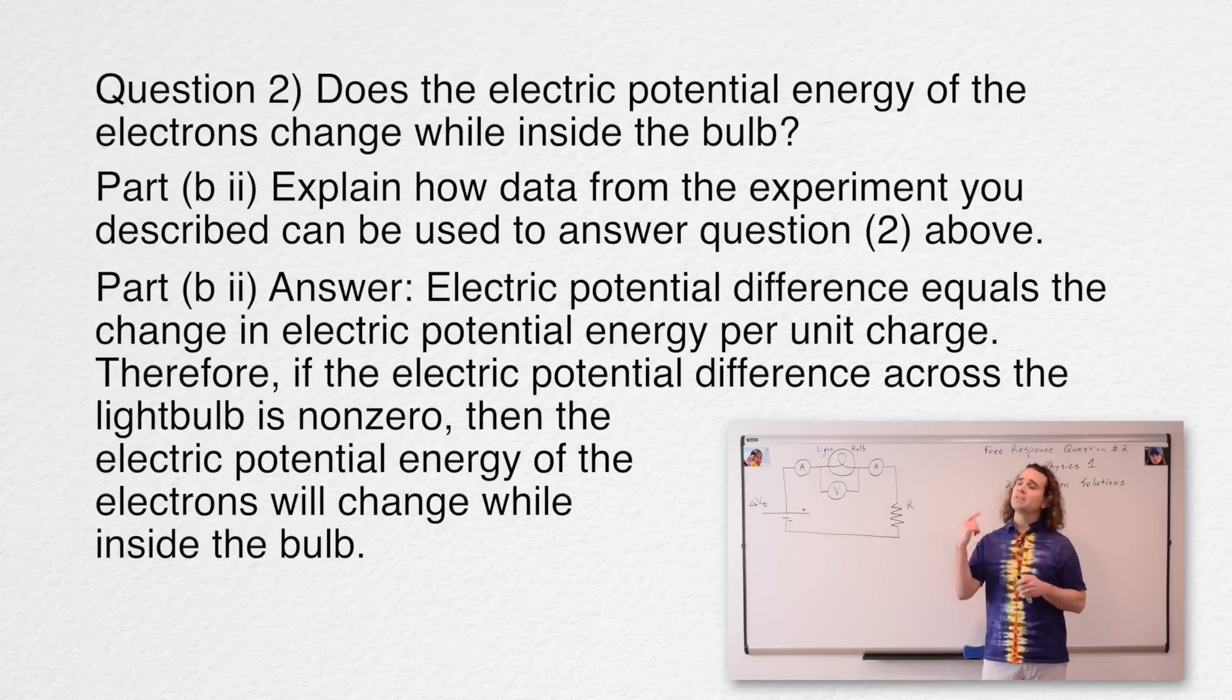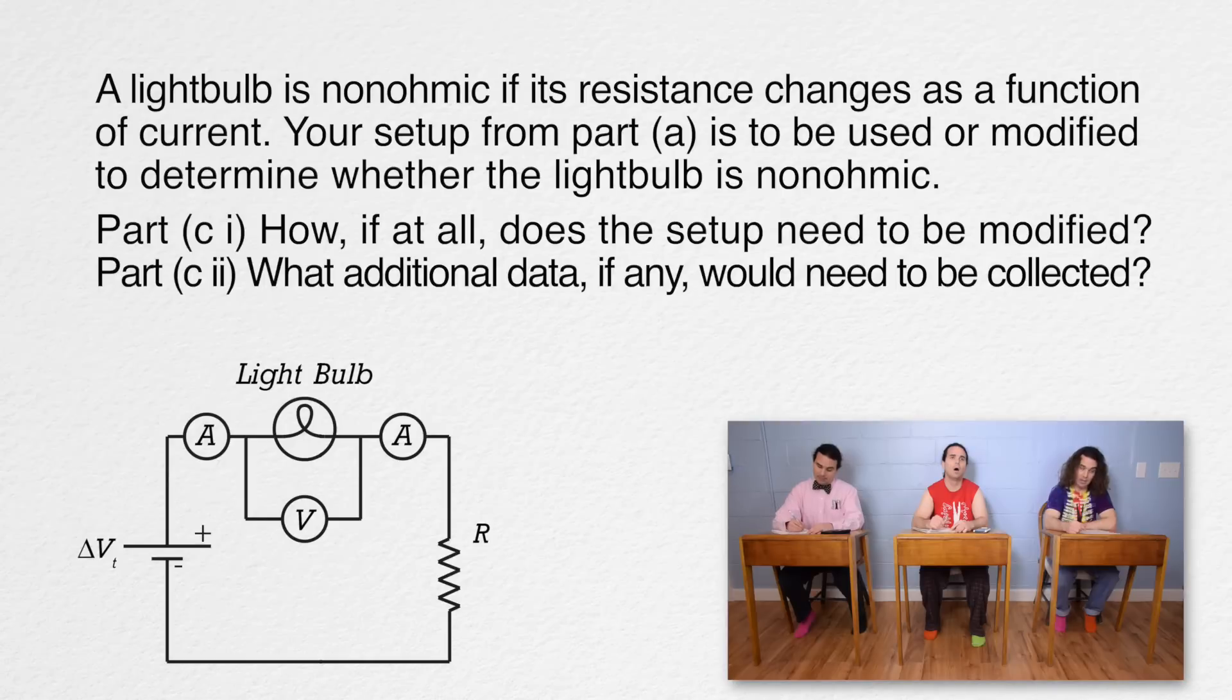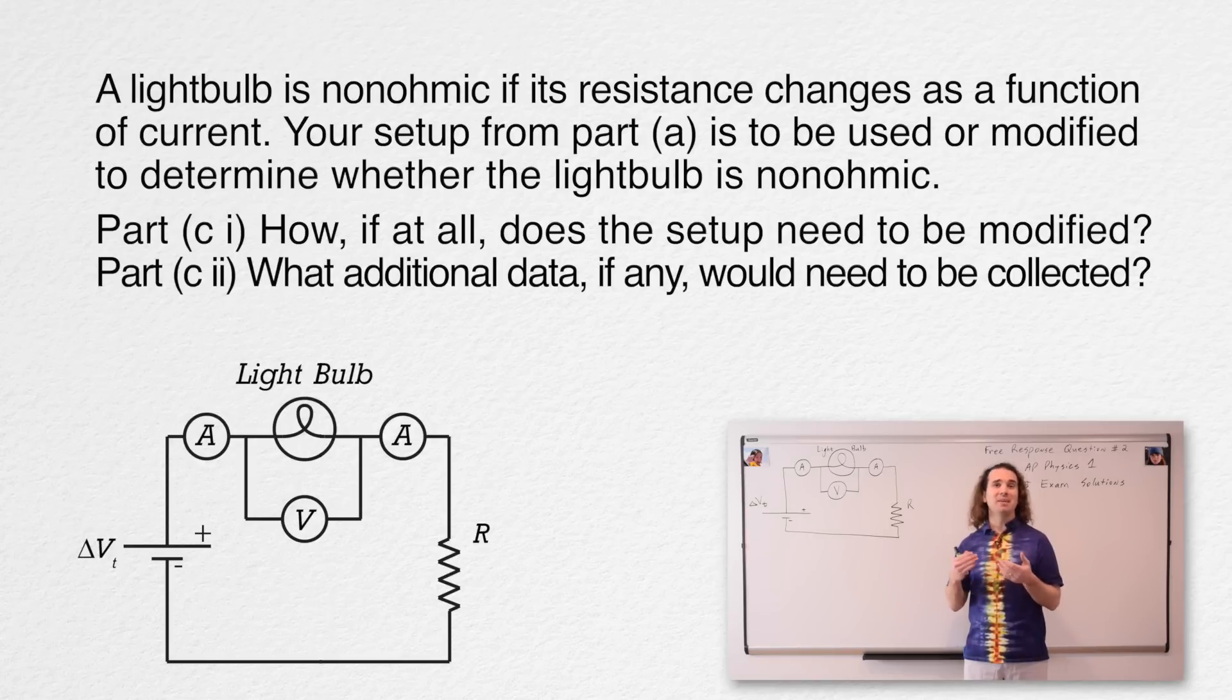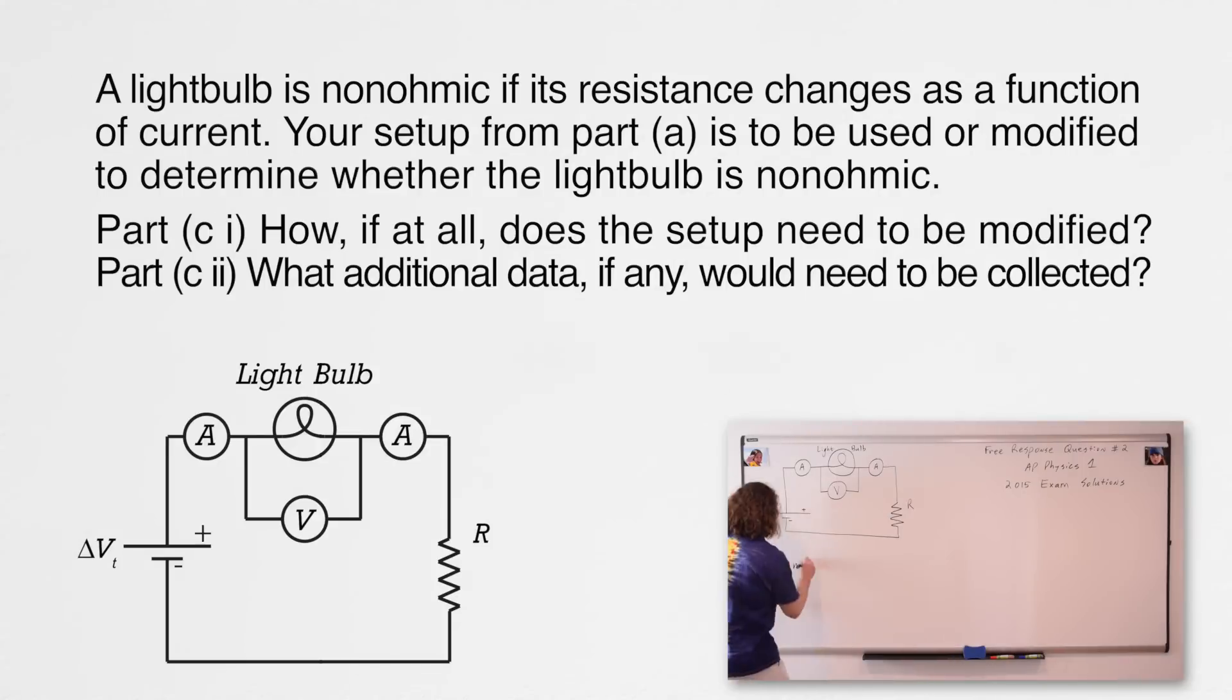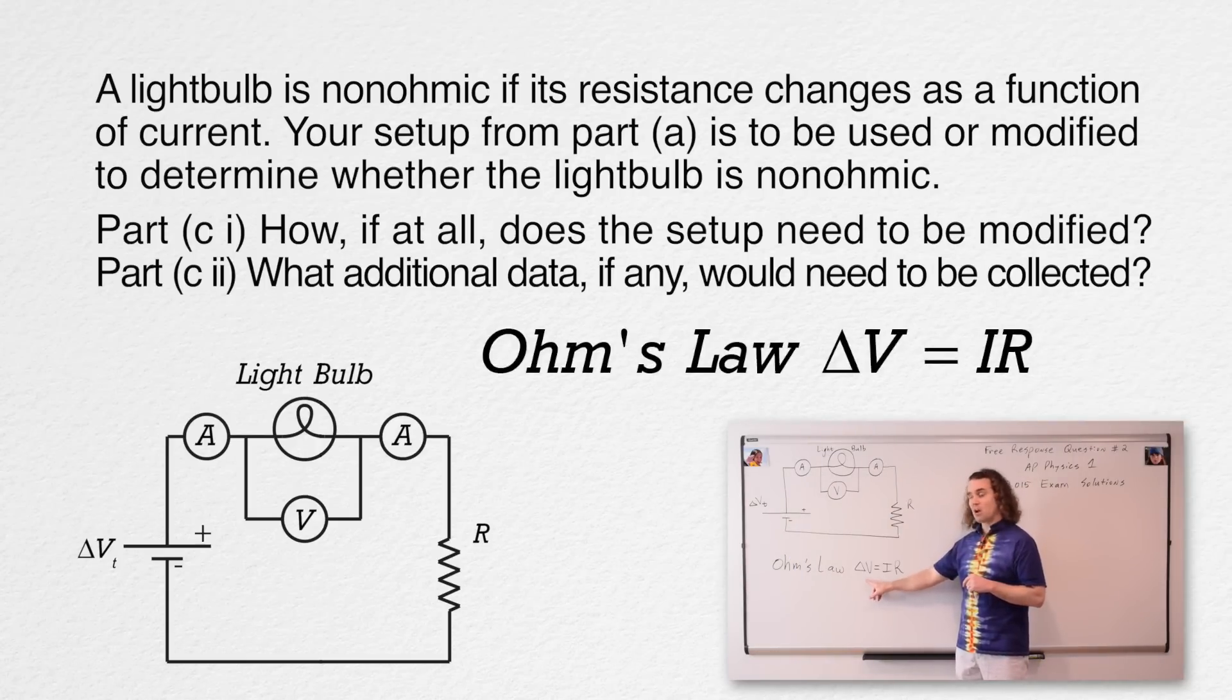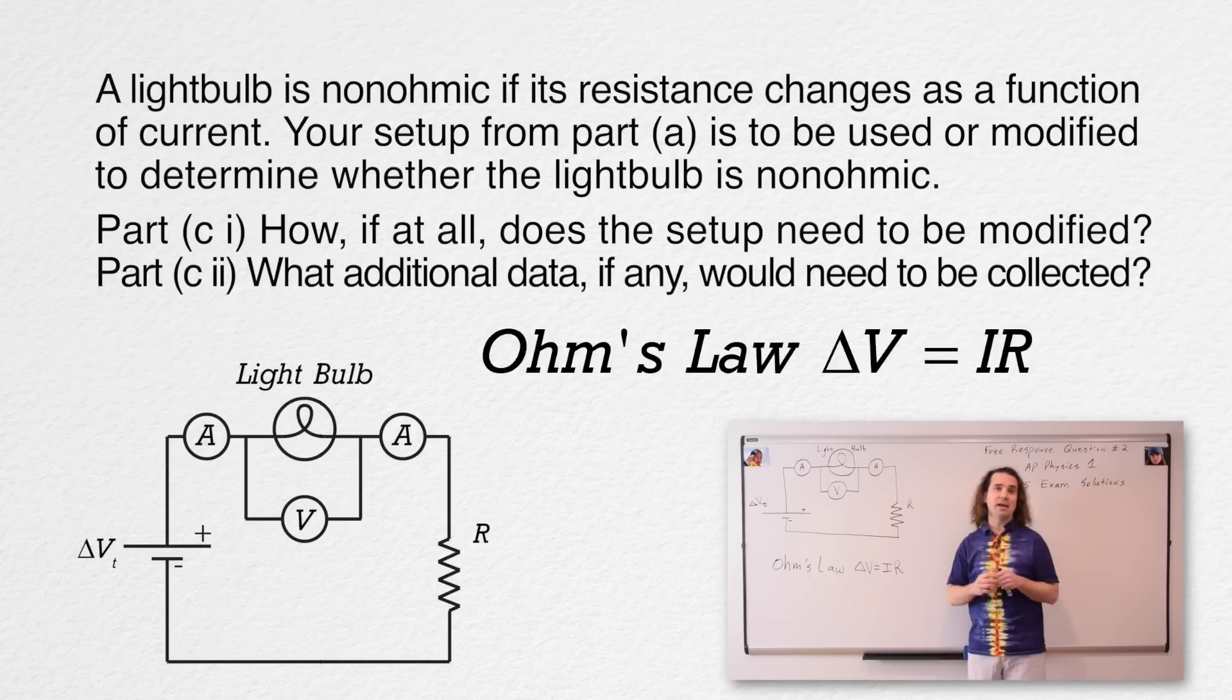Yes. Bo, could you please continue to read and read through part C(ii)? A light bulb is non-ohmic if its resistance changes as a function of current. Your setup from part A is to be used, or modified, to determine whether the light bulb is non-ohmic. Part C(i): How, if at all, does the setup need to be modified? Part C(ii): What additional data, if any, would need to be collected? We are testing to see if the light bulb is ohmic. In other words, to see if it follows Ohm's law. Ohm's law states that the electric potential difference across an object is equal to the current through that object times the resistance of that object. And if an object follows Ohm's law, it is considered to be ohmic. If this equation does not hold true for an object, then the object is considered to be non-ohmic.